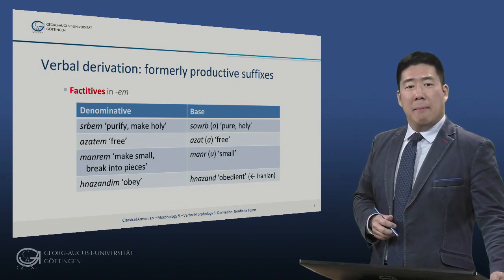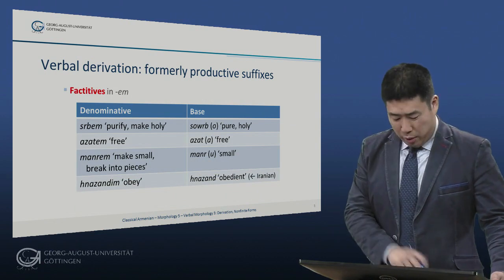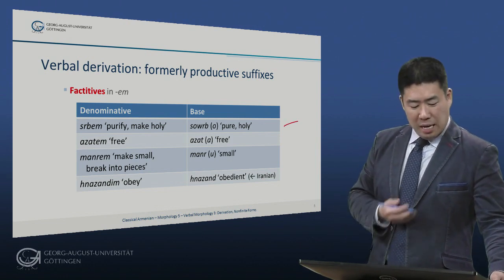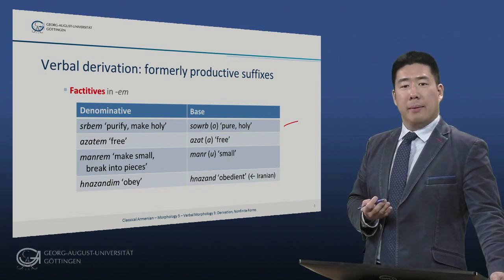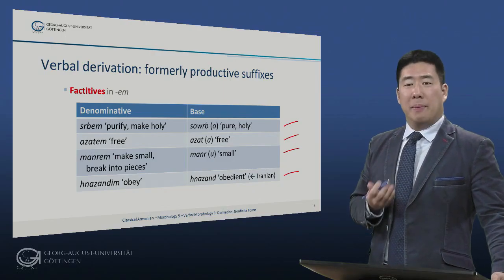There are also factatives in -em, meaning 'to make something X,' typically associated with adjectives. To the O-stem surb 'pure or holy,' we have serbem 'to make holy, to purify.' To the O-stem azat 'free,' we have azatem 'I free something, I make free.' To the U-stem maner 'small,' we have manerem 'to make small, to break into small pieces.' Finally, showing that this type remained productive into the Parthian period, we have the Iranian borrowing hnazand 'obedient' → hnazandim 'I obey, I make myself obedient.'